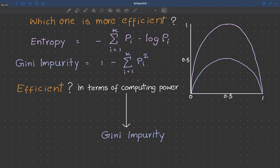If we need to think about the efficiency of these two impurity measures, let's first discuss in terms of computing power. Let's think about the efficiency in terms of computing power. Which one of these impurities is more efficient for computing? In other terms, which one of these impurities takes less time to compute?